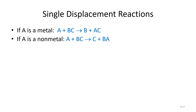Now we get into single displacement reactions. If A is a metal, A can bump out B to give us B plus AC. If A is a nonmetal, A combines with B and C to bump out C, giving us B plus AC.